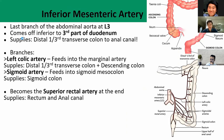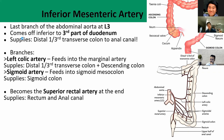Finally, the inferior mesenteric artery (IMA) comes off at L3, just below the duodenum, and supplies the distal part of the transverse colon all the way down to the anal canal. There are only two branches: the left colic artery — supplying the distal one-third of the transverse colon and the descending colon — and the sigmoid artery, which supplies the sigmoid colon.